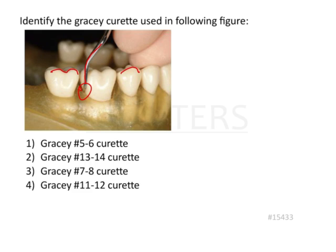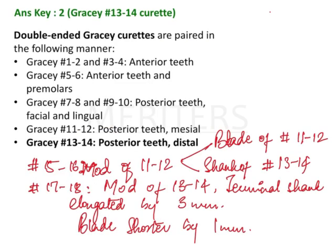The answer is Gracey 13 and 14. These are double-ended instruments. Curettes in general are classified into universal and Gracey. Gracey curettes are also called area-specific curettes.